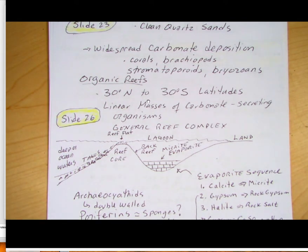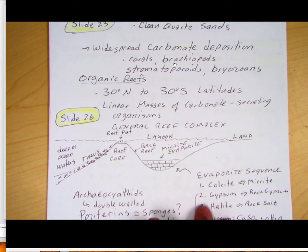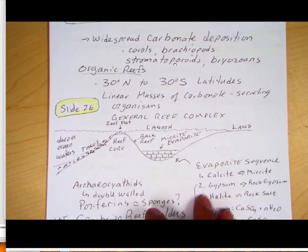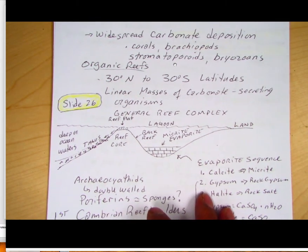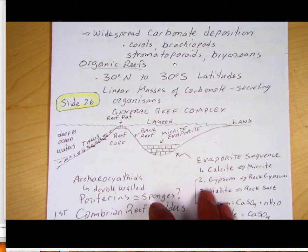These organic reefs are linear masses of carbonate-secreting organisms — primarily corals, stromatoporoids, the early organisms called archaeocyathids which were related to sponges, bryozoans, and brachiopods. Most invertebrates like arthropods or mollusks make a shell by secreting calcium carbonate from seawater. This Paleozoic is really marked by these carbonates.